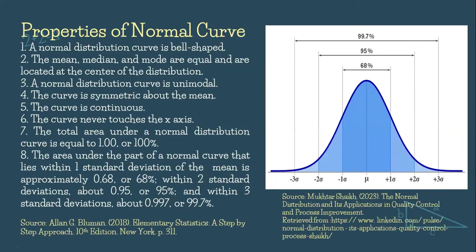Okay, so the normal distribution curve has the following properties. So the first property, a normal distribution curve is bell-shaped. And the mean, median, and the mode are equal and are located at the center of the distribution.